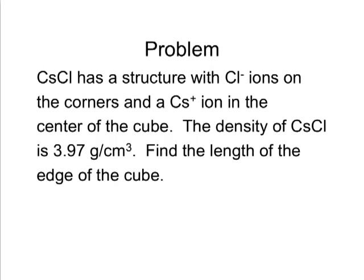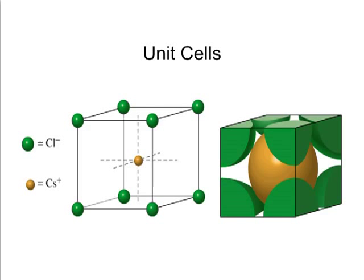So if we take a look at this problem I'm talking about cesium chloride. We saw cesium chloride earlier in a previous video. Here's the problem. We have the structure for cesium chloride, in which chloride ions are on the corners, and the cesium cation is in the body-centered location of the body-centered cubic unit cell. We know that the density of cesium chloride is 3.97 grams per cubic centimeter. And from the information of the structure of the unit cell and the density, we're going to determine how long the edge length of the cube is.